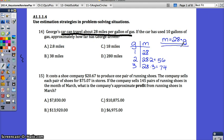If the car has used 10 gallons of gas, put in 10 now for gallons. How many miles will you have driven? What's 28 times 10? That's an easy one. It's just 280 because it's a multiple of 10. Your answer is D, 280 miles.